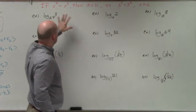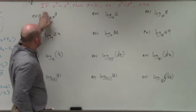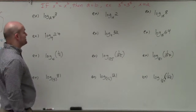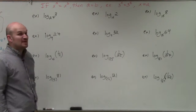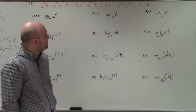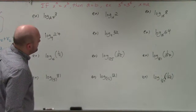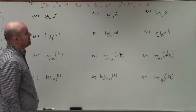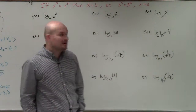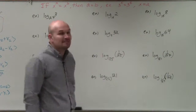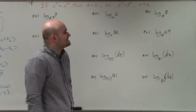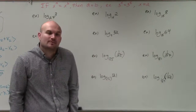The one-to-one property basically states: if I have x raised to the a equals x raised to the b, then a equals b. For example, if I have 3 raised to some number x and that equals 3 squared, it would make sense that if 3 to the x equals 3 squared, then x has to equal 2.